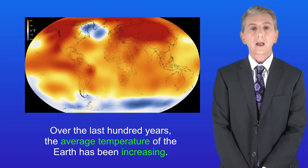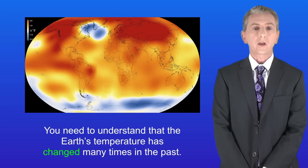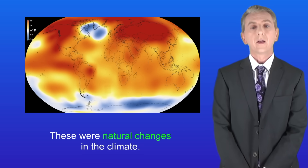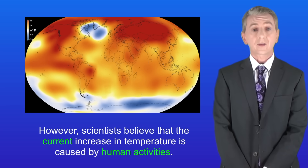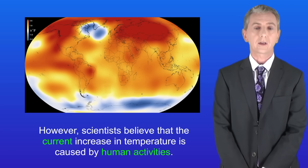Over the last hundred years the average temperature of the earth has been increasing. The earth's temperature has changed many times in the past — these were natural changes in the climate. However, scientists believe that the current increase in temperature is caused by human activities.